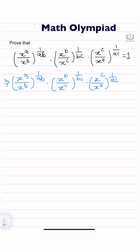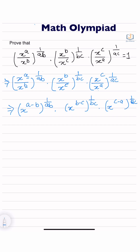So we are writing this as x to the power a minus b, to the power 1 upon ab, into x to the power b minus c, to the power 1 upon bc, and x to the power c minus a, to the power 1 upon ac. Now we are multiplying these terms together.